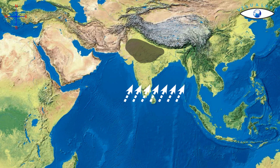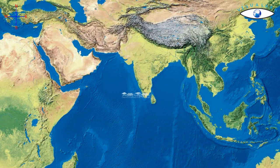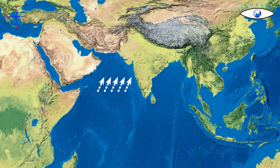The monsoon arrives at the southern tip of the Indian Peninsula generally by the first week of June. Subsequently, it proceeds into two branches: the Arabian Sea Branch and the Bay of Bengal Branch.